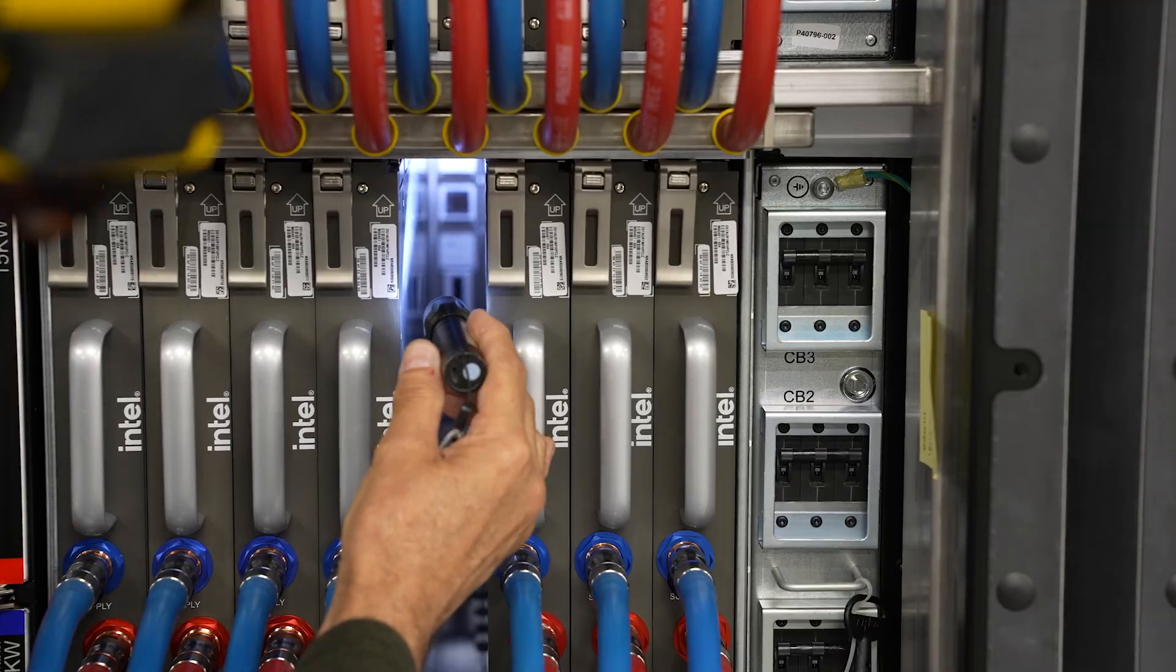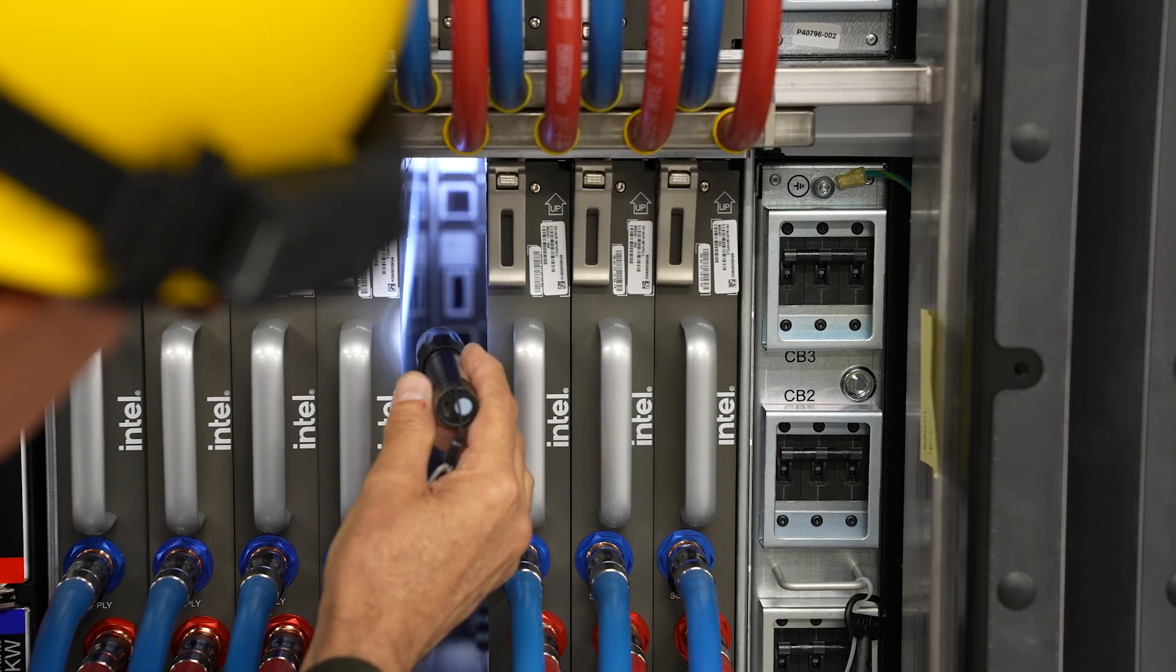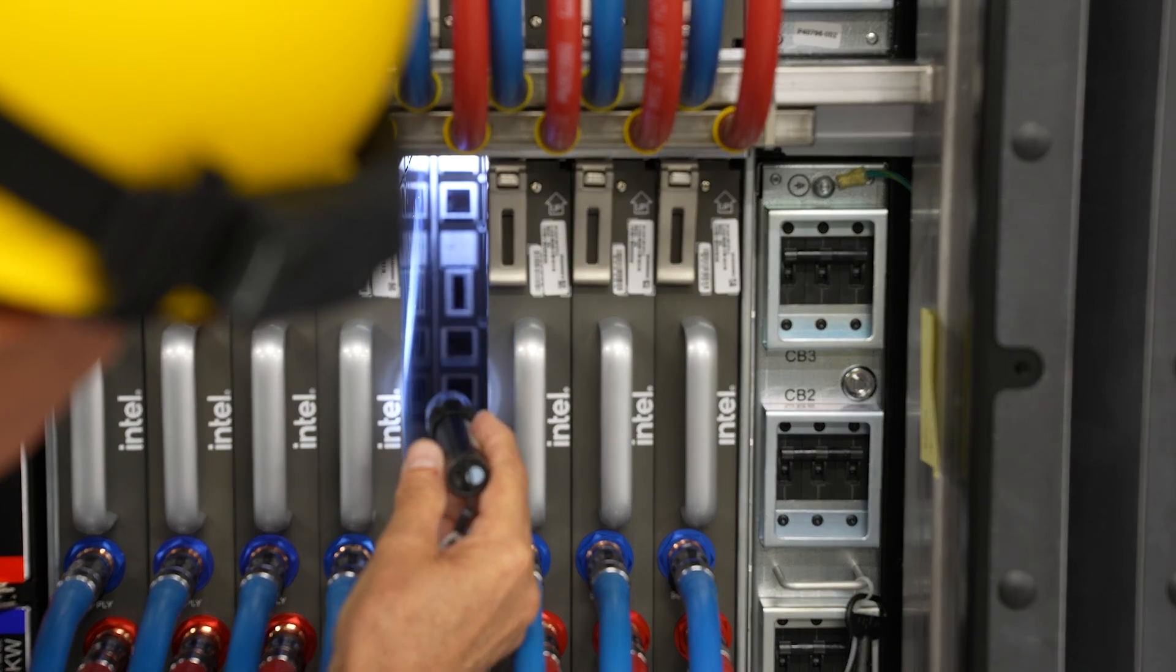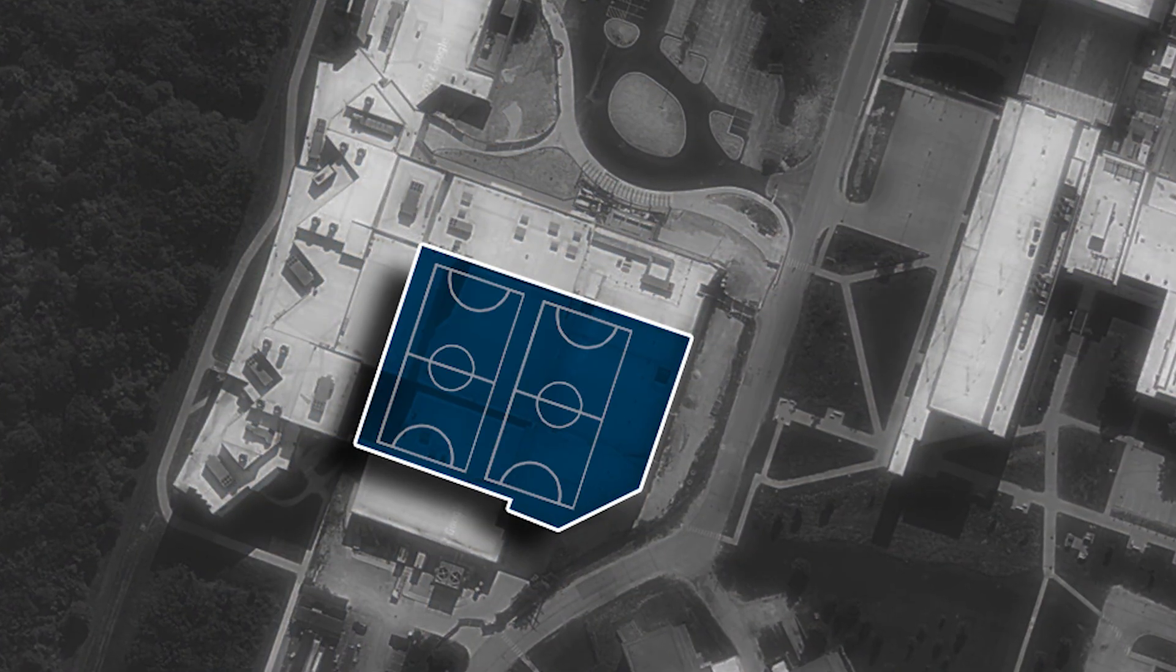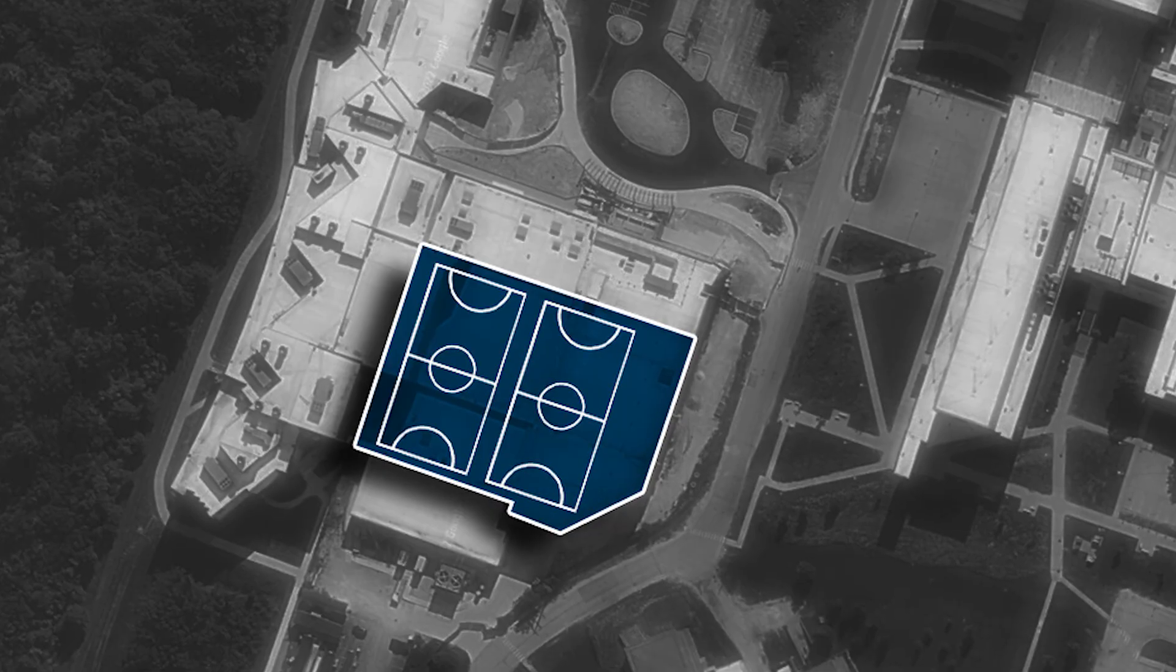This enables the processing of vast volumes of data analyzing in real time. The Aurora footprint is massive, taking up the space of about two NBA basketball courts.